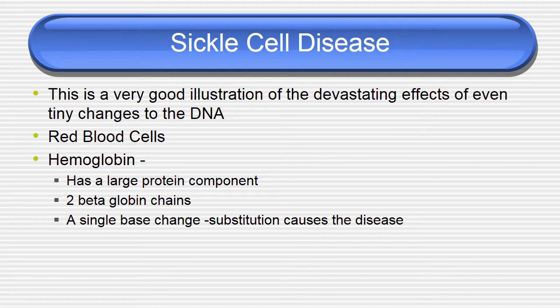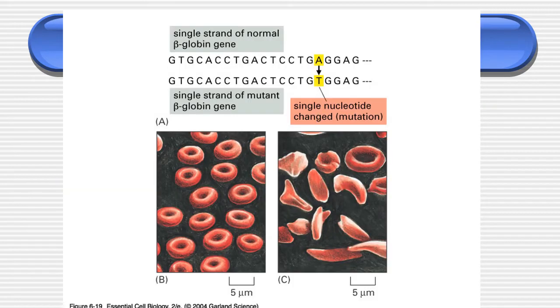One of the major illustrations of DNA damage is sickle cell anemia — a good illustration of devastating effects of even tiny changes in DNA. The red blood cell hemoglobin has a large protein component; two beta globin changes occur, and a single base change substitution causes the disease. This is clearly shown: in a single strand of normal beta globin gene, a mutation in a single base pair causes the disease.